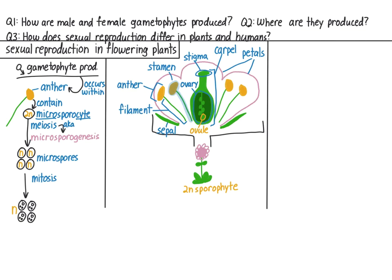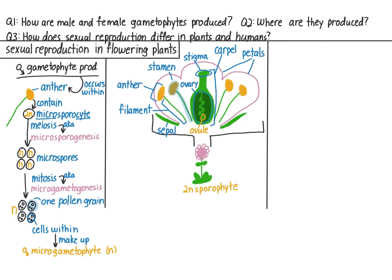This happens within what develops into a pollen grain. This group of cells within the pollen grain constitutes the male gametophyte, or micro-gametophyte. Two of those cells are sperm cells. This mitosis is also known as micro-gametogenesis, because each spore produces one micro-gametophyte by dividing through mitosis. So to summarize: each microsporocyte undergoes meiosis (microsporogenesis), producing four haploid microspores, each of which undergoes mitosis (micro-gametogenesis) to produce four gametophytes, each within its own pollen grain.